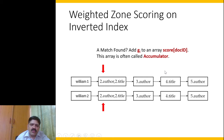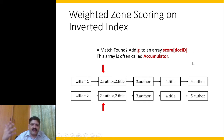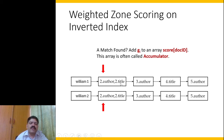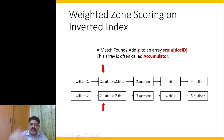This is what we call weighted zone scoring on an inverted index. We do a match, and whenever there is a match we add the zone weight gᵢ to a score array indexed by document ID. As we do the merge process we compute the weighted zone score, since all zone information is stored together in one list item. This score array is called an accumulator, and once done we look for the top documents to retrieve as results.